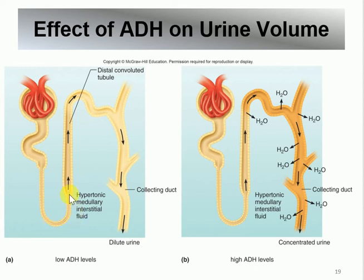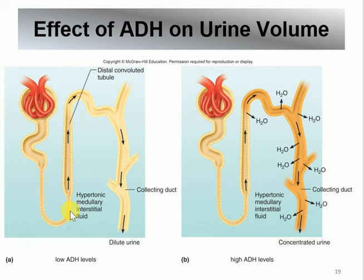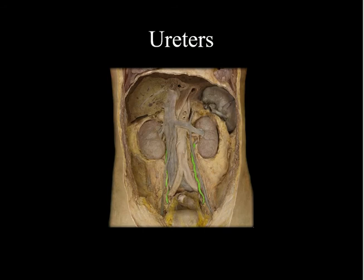Aldosterone also works on the distal convoluted tubule and collecting duct, but it reabsorbs sodium (not water). So: ADH reabsorbs water; aldosterone reabsorbs sodium. The loop of Henle is mainly involved in water reabsorption through a process called the countercurrent effect, which makes the medullary interstitial fluid more hypertonic, helping water move out of the loop of Henle back into the body.